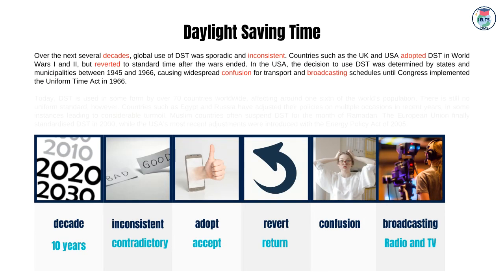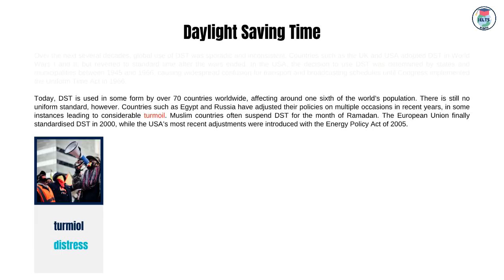Over the next several decades, global use of DST was sporadic and inconsistent. Countries such as the UK and USA adopted DST in World Wars I and II, but reverted to Standard Time after the wars ended. In the USA, the decision to use DST was determined by states and municipalities between 1945 and 1966, causing widespread confusion for transport and broadcasting schedules until Congress implemented the Uniform Time Act in 1966. Today, DST is used in some form by over 70 countries worldwide, affecting around one-sixth of the world's population. There is still no uniform standard, however. Countries such as Egypt and Russia have adjusted their policies on multiple occasions in recent years, in some instances leading to considerable turmoil.